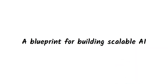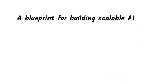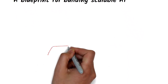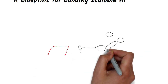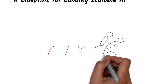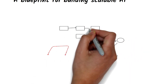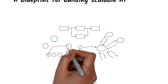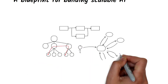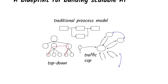A blueprint for building scalable AI. In my last video, I talked about how business processes are the lifeblood of an organization and why you should model them in the right way. Only if we fully understand our processes can we make them better to deliver possibly exponential value to our customers.